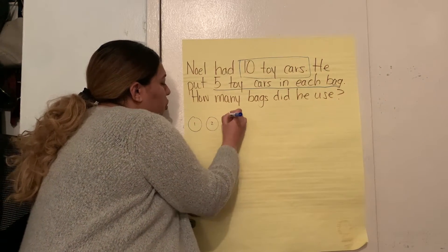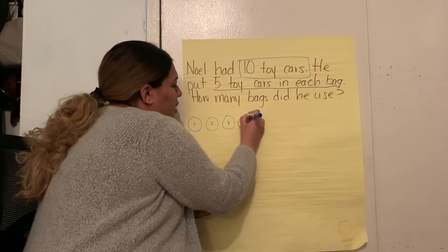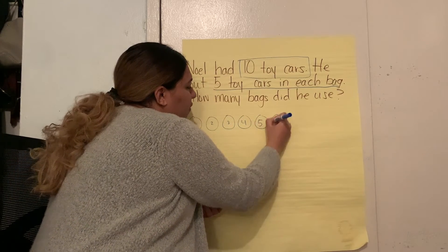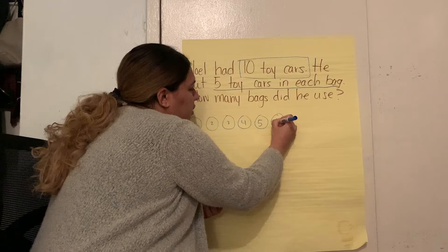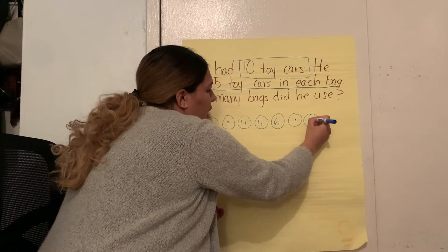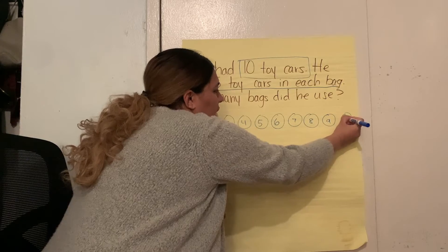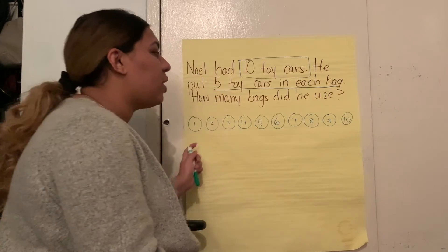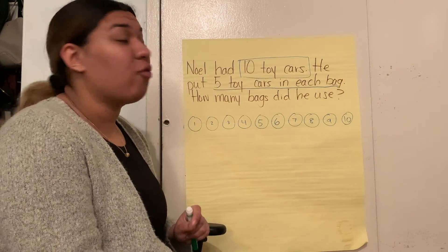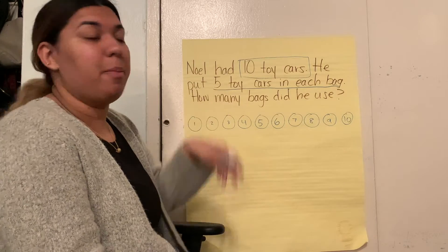1, 2, 3, 4, 5, 6, 7, 8, 9, 10. Notice how I drew my circles in one line, so it's easier for me to put them in separate bags.